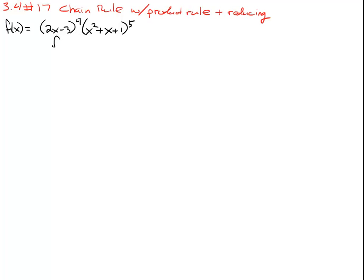So we are going to do a product of f and g. We identify this is my f function and this is my g function. We remind ourselves the product rule is: derivative of the first times the second, plus the first times the derivative of the second. So all we have to do now is calculate those individual parts.